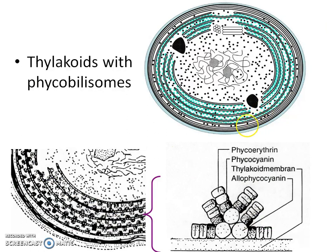Internal morphology of cyanobacteria: this green, long thread-like structure is called a thylakoid, which has phycobilisomes. These small green structures associated with the thylakoid are the site of photosynthesis. They carry the pigments chlorophyll A, carotenoids, phycoerythrin, and phycocyanin.